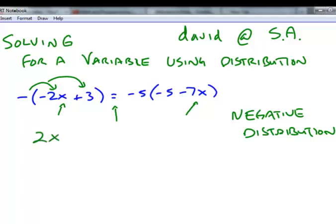So opposite of negative 2x is a positive 2x. Opposite or negative times a 3 is a negative 3. A positive 3 there would be a negative 3. Over here a negative 5, so this is like negative distribution.